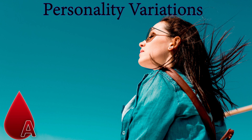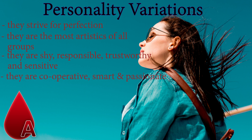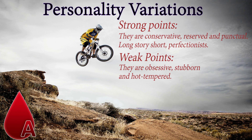Group A: Individuals of blood group A strive for perfectionism and are the most artistic of all blood groups. They are shy, responsible, trustworthy, and sensitive — cooperative, smart, and passionate. They sometimes have anxiety and tend to keep their emotions bottled up until they explode. Strong points: conservative, reserved, and punctual — perfectionists. Weak points: obsessive, stubborn, and hot-tempered.